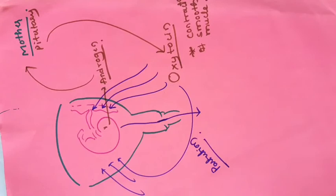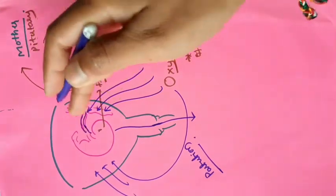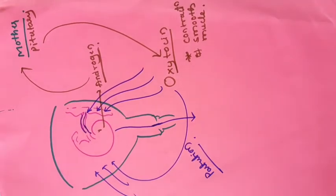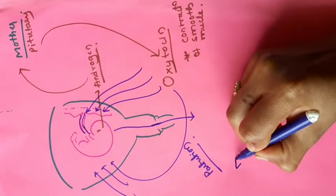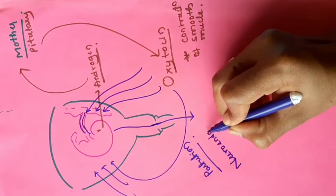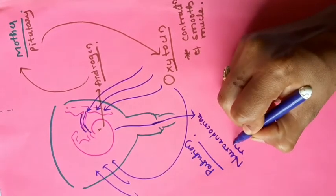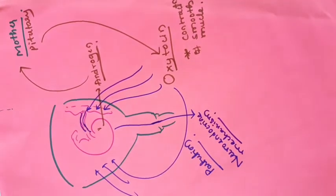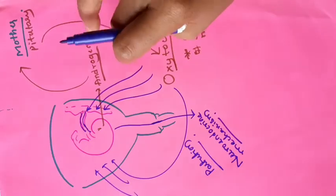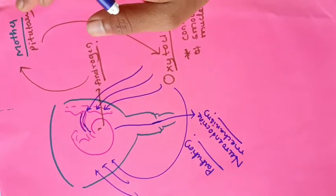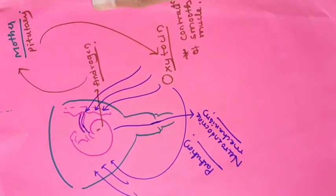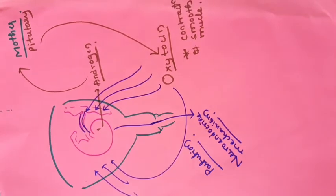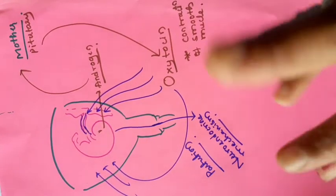Soon after the infant is delivered, along with the fetus, the placenta is also expelled out. Parturition is a neuroendocrine mechanism. When the gestation period is over, the fetus secretes the hormone androgen, which acts on the endocrine gland — the pituitary gland of the mother. The pituitary receives the signal and starts secreting oxytocin, which acts on the smooth muscle to help in contraction and thus in parturition.